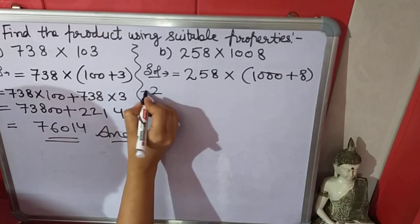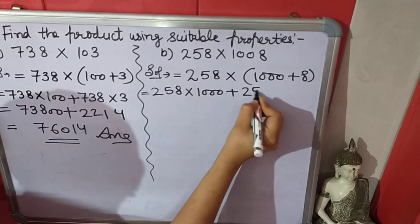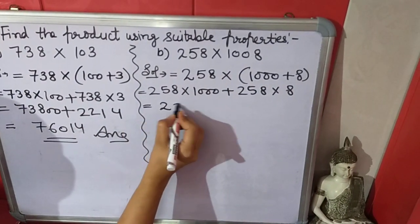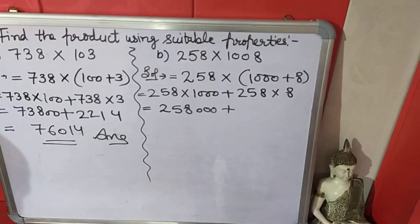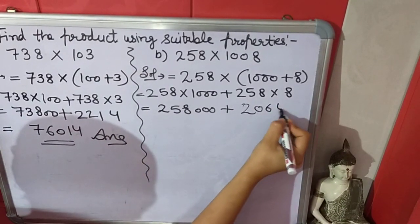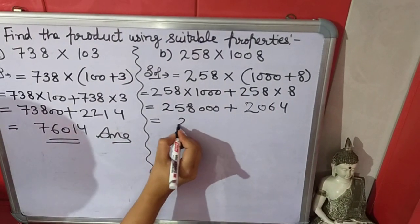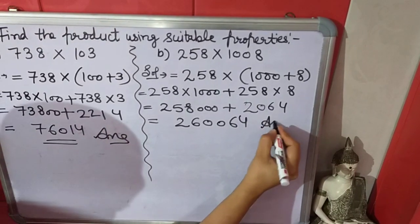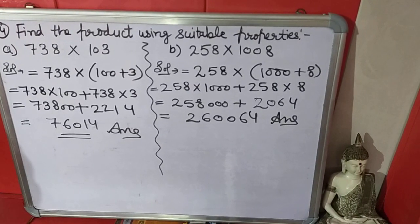Multiply. Now we will add these numbers. This is the product of both numbers by using distributive property.